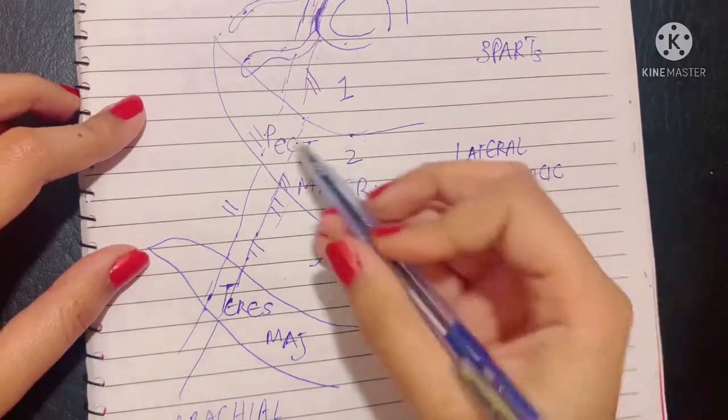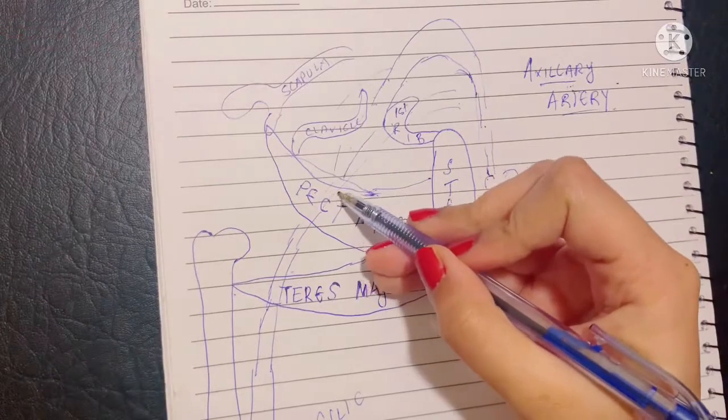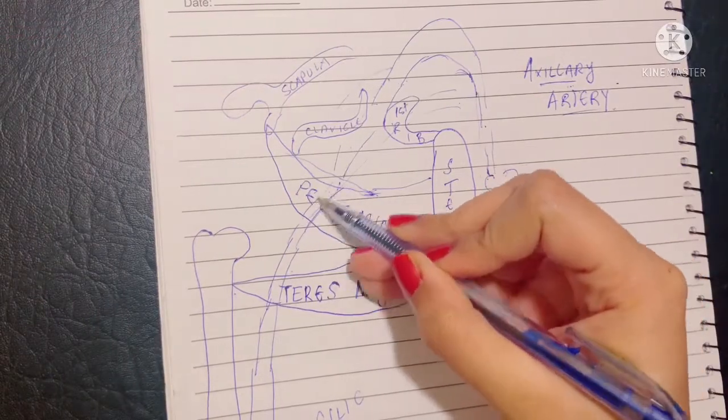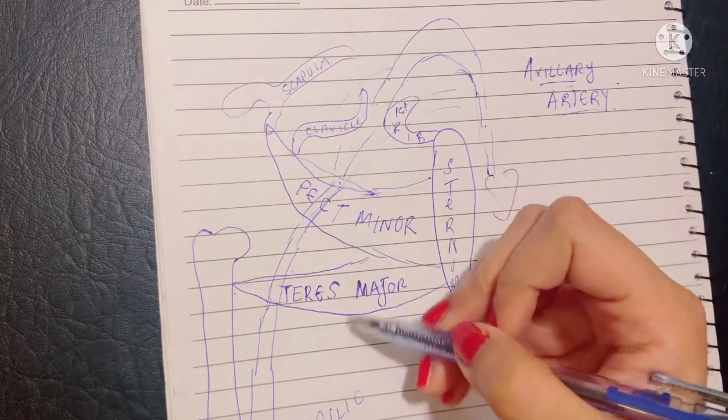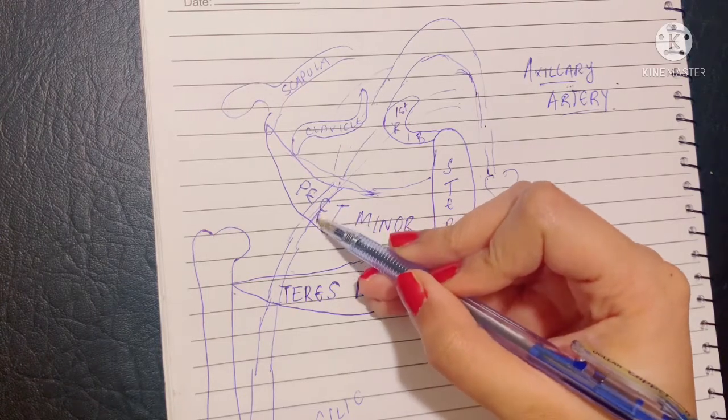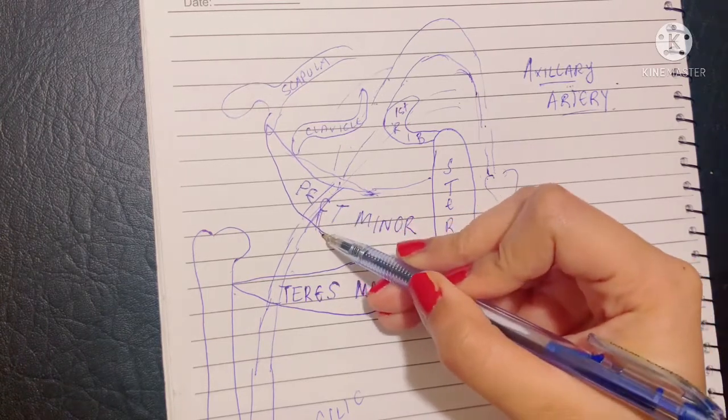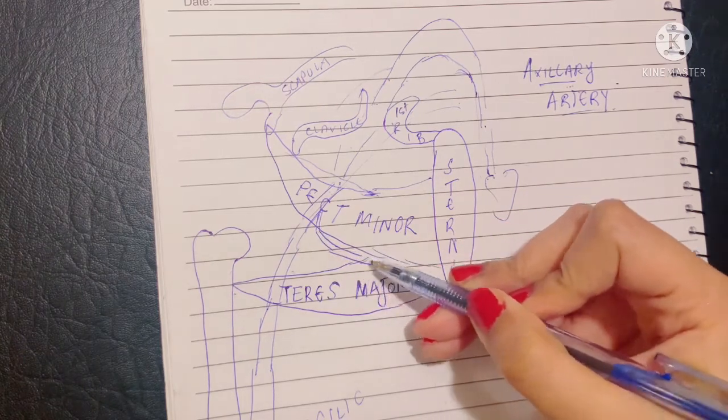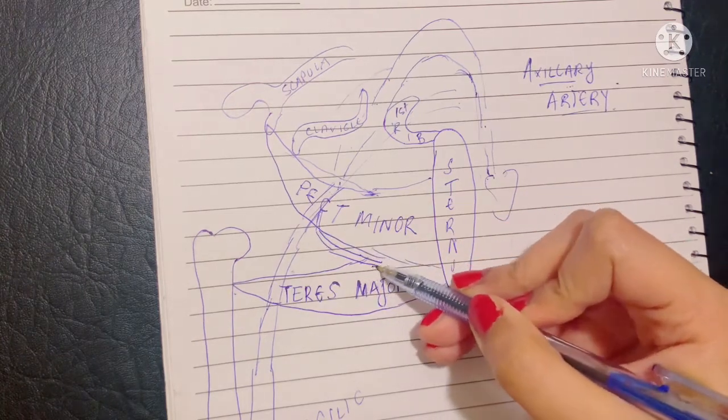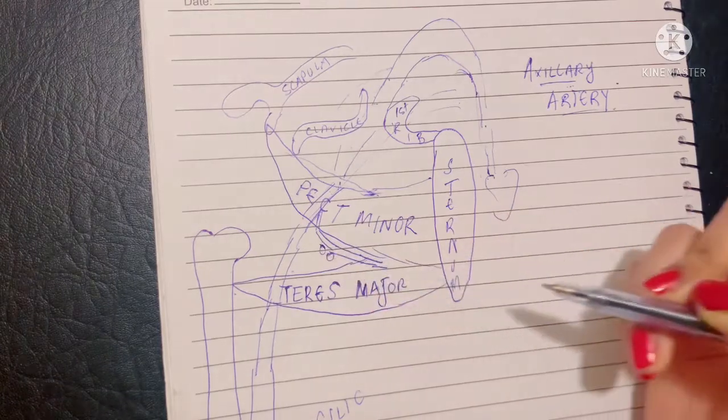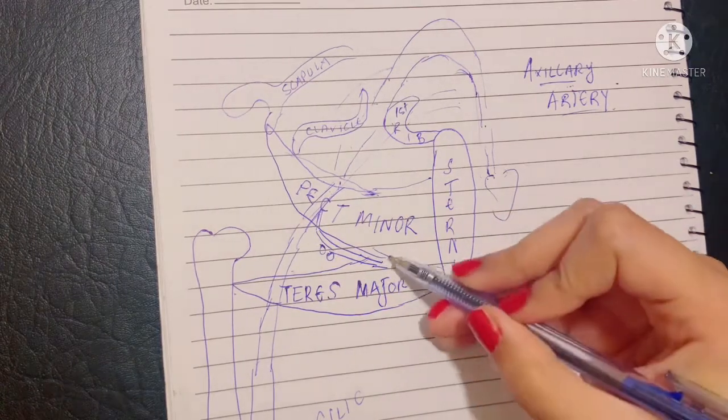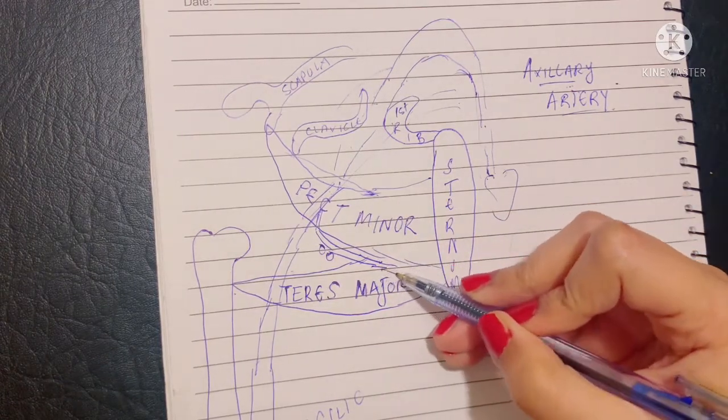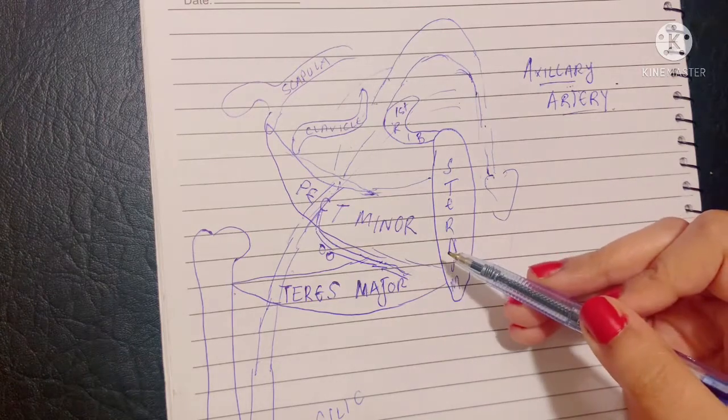The lateral thoracic artery emerges at the second part of the axillary artery. Now you guys remember the second part was beneath the pect minor muscle. It emerges from the second part of the axillary artery and it runs along the lower border of the pectoralis minor muscle in close relation to the anterior group of axillary lymph nodes. And it ends by supplying the trunk and the breast.